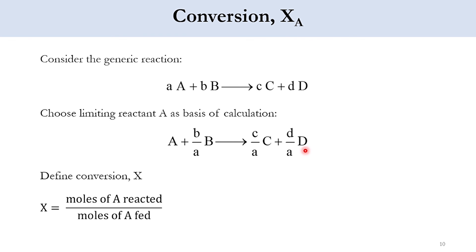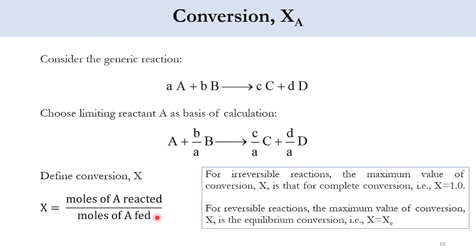The question is: how do we quantify how far a reaction proceeds, or how many moles of C are formed per mole of A consumed? The factor that quantifies this is conversion X, defined as moles of A reacted divided by moles of A fed. Higher conversion means more product formed. For irreversible reactions, the maximum conversion is 1; for reversible reactions, the maximum is the equilibrium conversion.